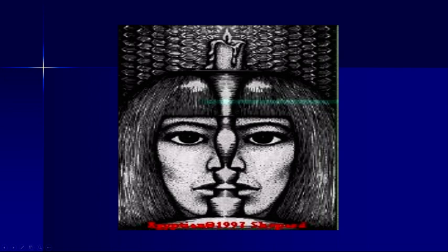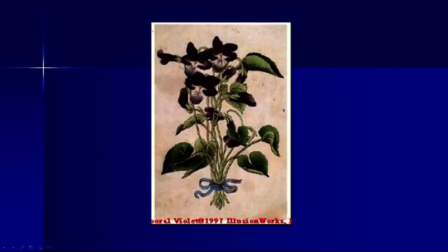Here you can see one face staring out at you, or you can see two faces staring at each other — it kind of freaks you out because you can flip it back and forth. For me it's easiest to see the one face if I look up at the eyes; if you look down at the nose and mouth you can see them staring at each other. In this next example there are some faces hidden — I believe there are at least three. There's a face here, another one here, and one over here; there might even be more.